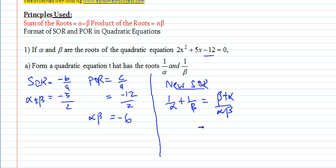Now what's the purpose of doing this? You can now substitute the alpha plus beta, which is negative 5 over 2. So substitute it, that's negative 5 over 2 over alpha beta. What's the alpha beta? Negative 6. And your new sum of the root would be 5 over 12.